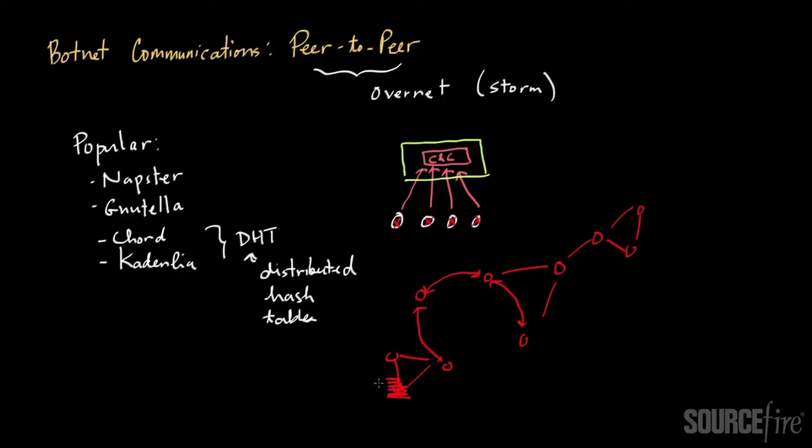Now the drawback of this type of architecture is that bot masters really no longer have that direct line of communication with their bots. If you think about the centralized model, a bot master issues a command here and everyone gets it. If you have a peer-to-peer model, commands are going to be propagated across the network, and it might take a long time for a single command that's been inserted at one node to really propagate its way to all of the other nodes in the network. And that basically increases latency.